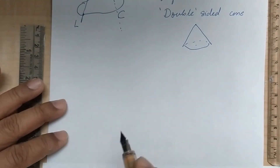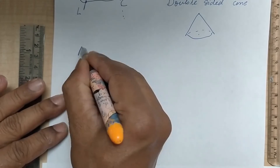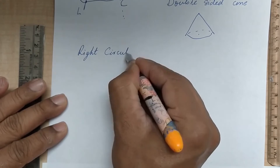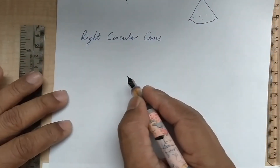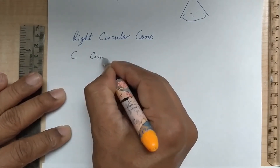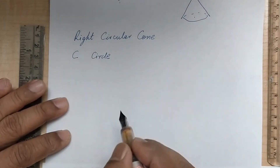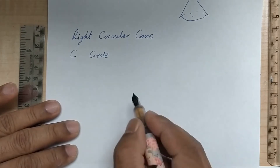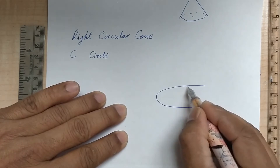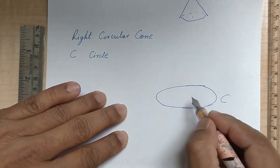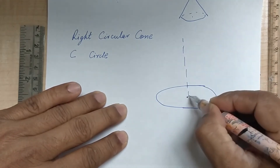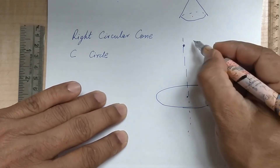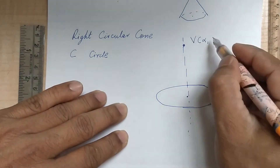If we specialize all this to the right-circular cone, the guiding curve C will be a circle, and the vertex V will be a point on a line perpendicular to the circle and passing through its center. Let us call this vertex point as (alpha, beta, gamma).